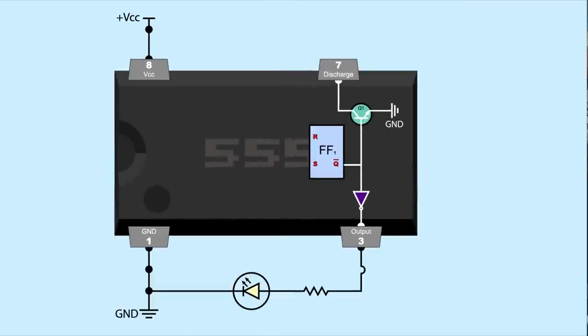Not-Q also connects to the base of a transistor. The transistor connects pin 7 at its collector to ground at its emitter. When the flip-flop is set, not-Q outputs low, so the 555 outputs the inverse, high. When the flip-flop is reset, not-Q outputs high. The 555 output is low, turning off the LED. But the transistor is on, connecting the discharge pin to ground. I'll get into why that's useful in a little bit.